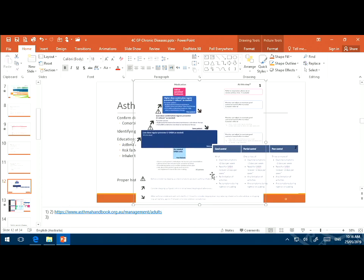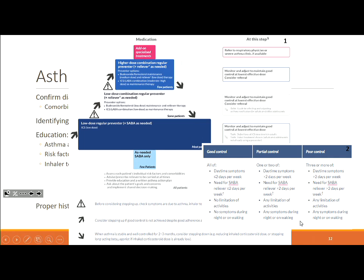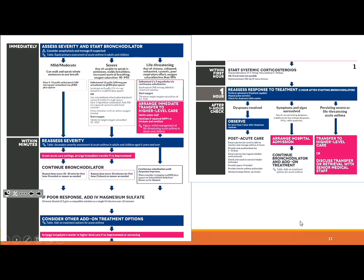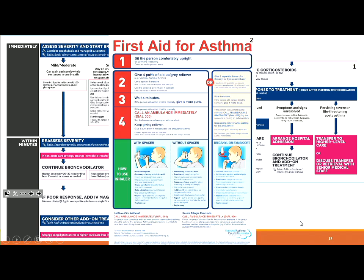There's a stepwise management for asthma and emergency asthma management — it does come up. For community management of an asthma exacerbation: four puffs of a bronchodilator, one puff at a time, wait four minutes, then repeat. If not better after the second attempt, call an ambulance. This is from the Asthma Handbook and is pretty much the standard approach.